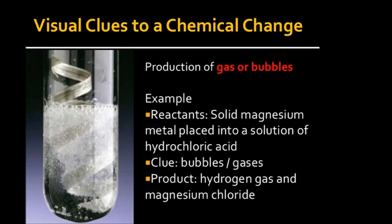The next factor which proves that a chemical change has occurred is the production of gas or bubbles. For example, when a magnesium ribbon is dipped in hydrochloric acid — magnesium is silver in color — hydrogen gas is evolved and can be seen in the form of bubbles in the test tube. The products formed are hydrogen gas and magnesium chloride.